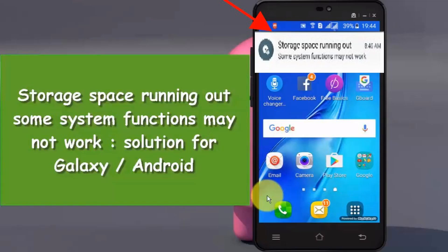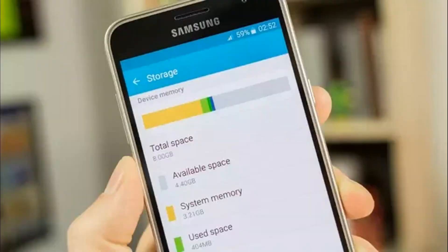The majority of outdated phones have a small internal memory. This renders them unusable once all updates have been installed, unless the phone's memory is at least 16GB — otherwise it will not function properly.